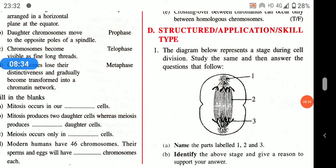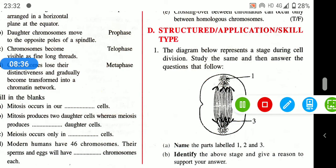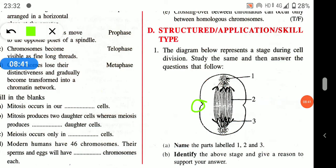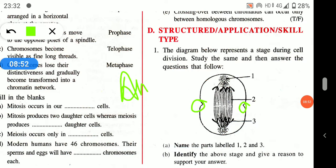Studying the diagram of cell division: students often get confused because the constriction begins at anaphase but is distinctly clear at telophase. However, this diagram is 100% an anaphase stage.